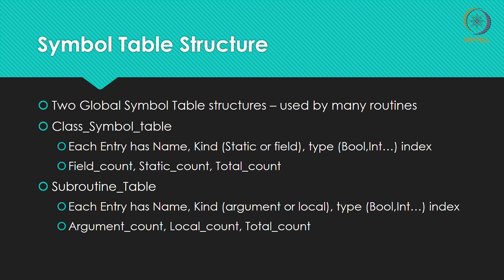We have to construct two symbol table structures, and these two structures are going to be global because they will be used by multiple routines. The class symbol table will have multiple entries, and each entry will have four things: the name of the variable, the kind of the variable (static or field), the type of the variable (boolean, int, char, or some class name), and the index of the variable.